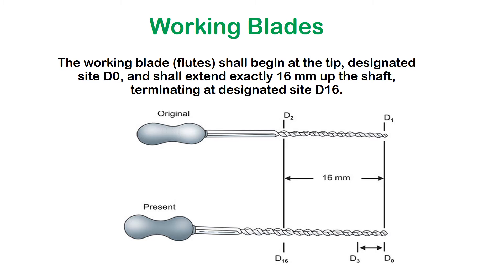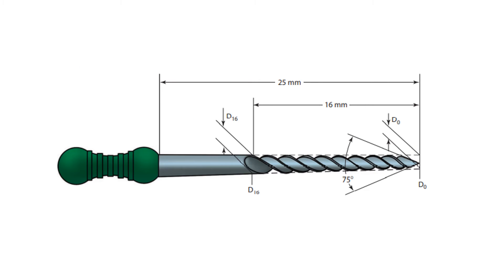In earlier files, the tip diameter was denoted as D1 and the 16 mm end as D2, but this has been revised. Now the tip diameter is called D0 and the end of the 16 mm working blade is known as D16. So D0 is at the tip, then 1 mm from the tip is D1, 2 mm is D2, and so on until D16. The total working blade length is 16 mm.